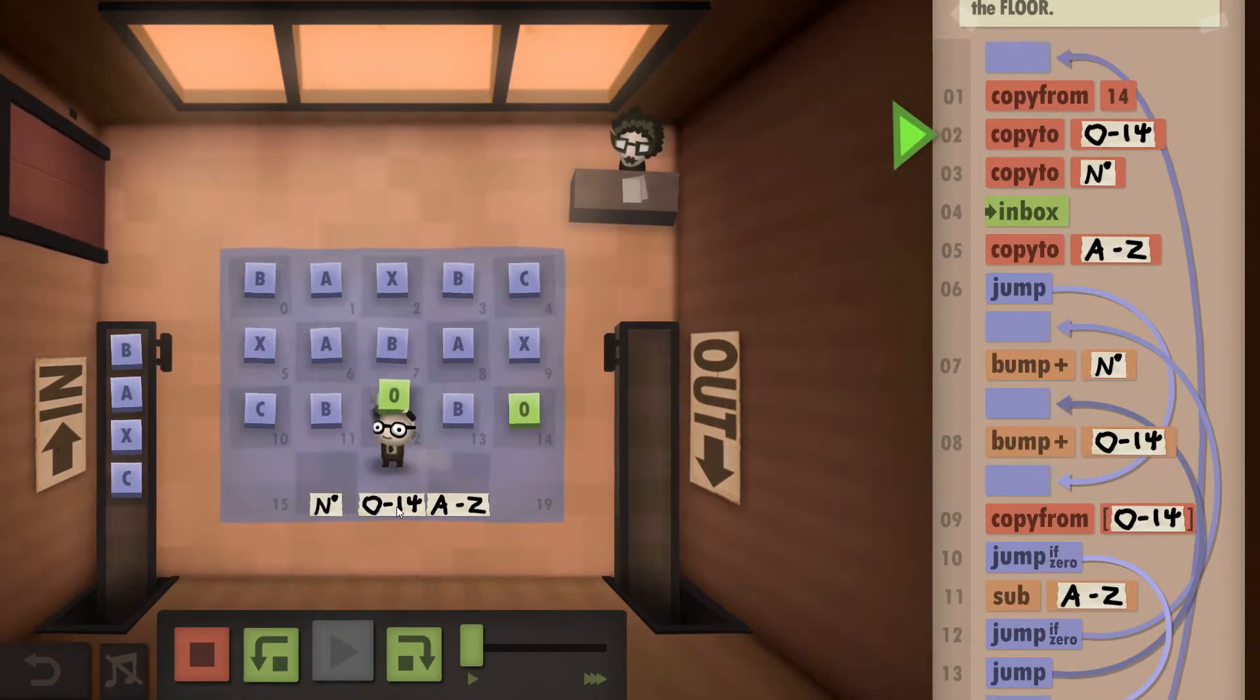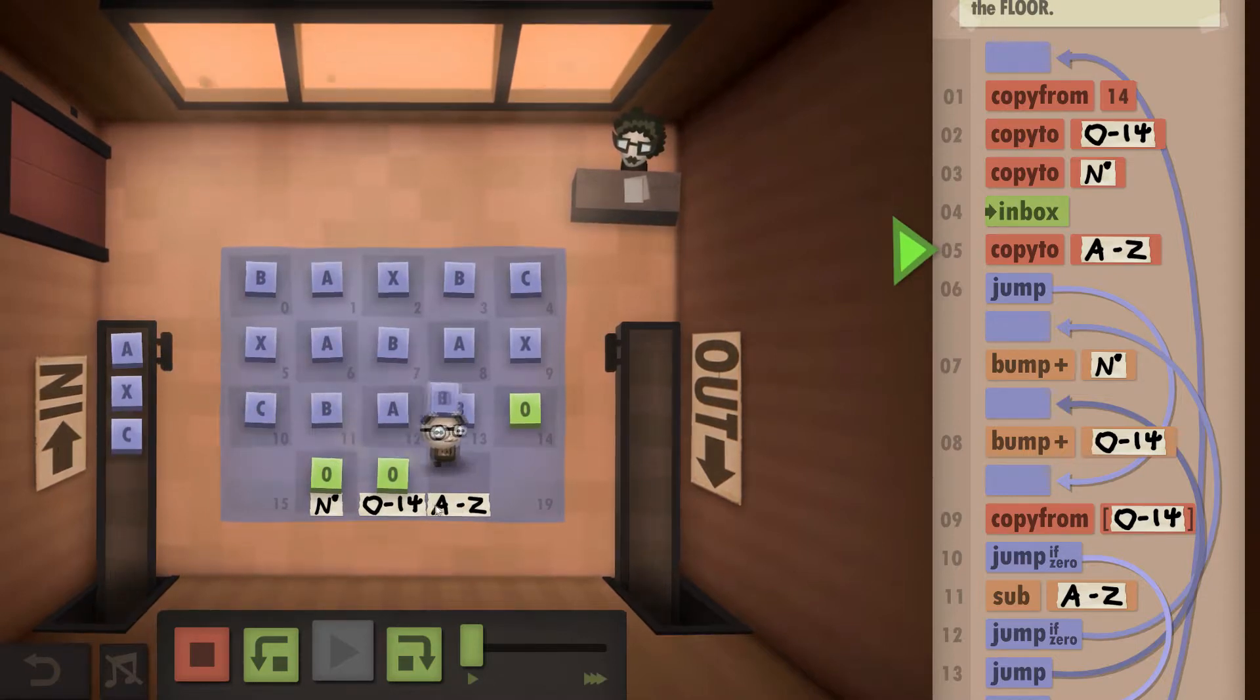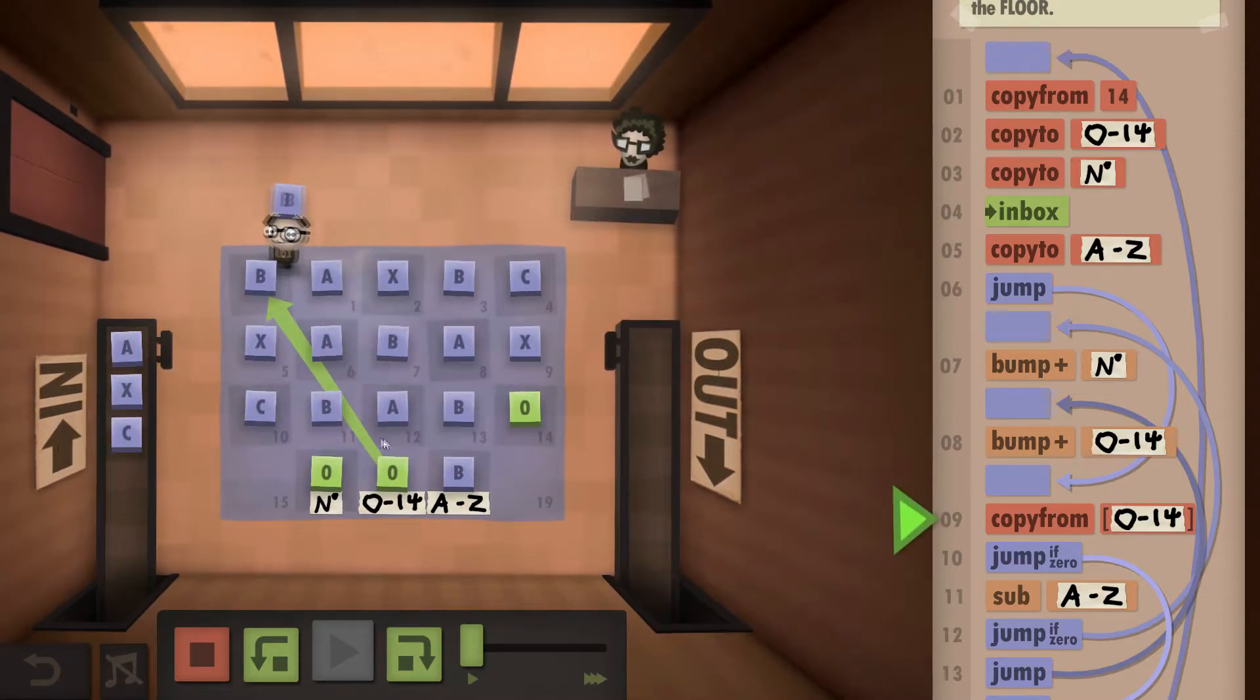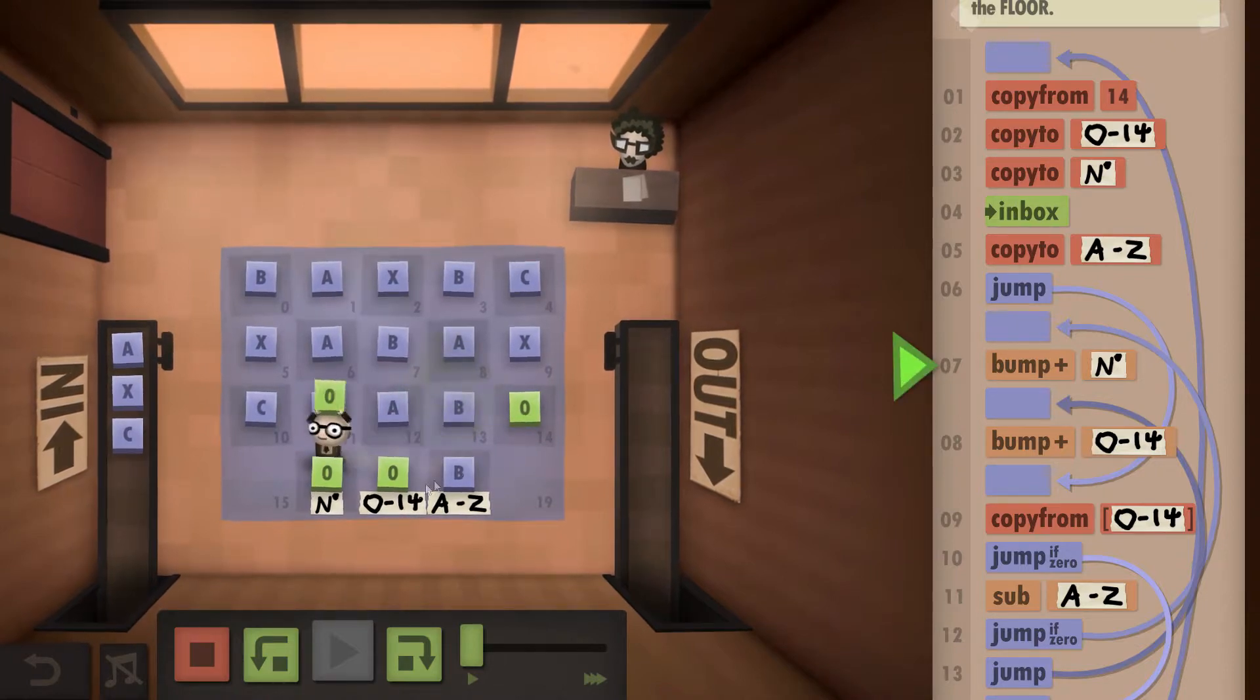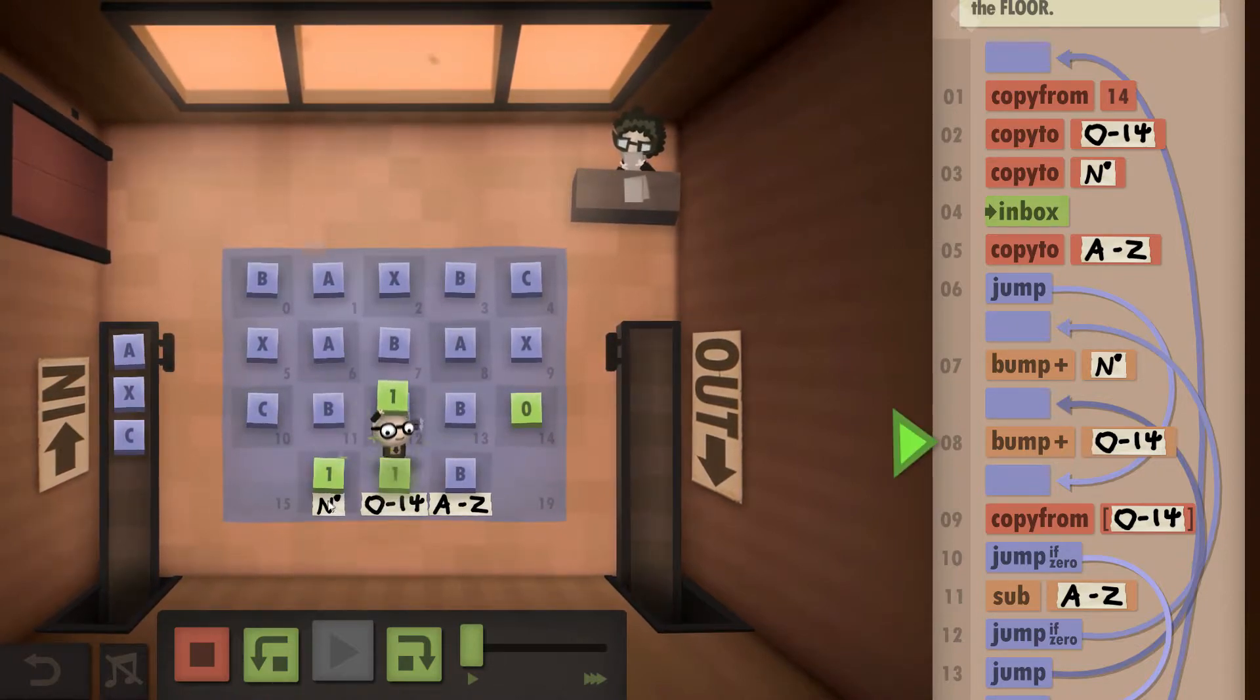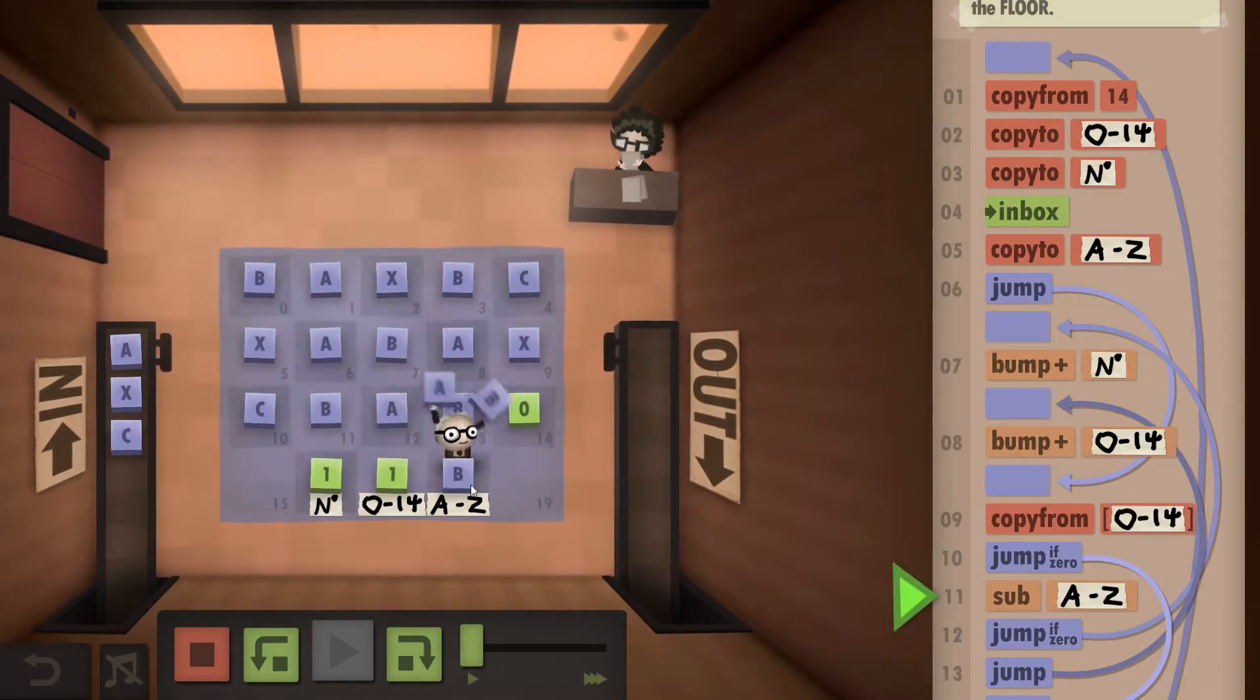So we're going to grab the zero, I'm going to put it in these two first boxes, I'm going to grab a B, I'm going to write it down, and now we need to start comparing. So we're going to grab a B, take B, B minus B is zero, so I'm going to bump that up - so we found a B - and we're going to look at the next number.